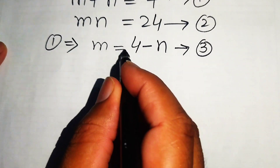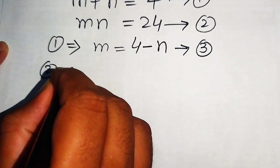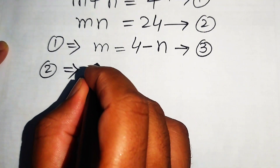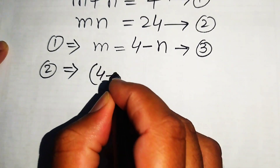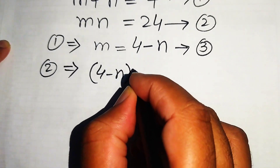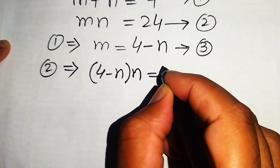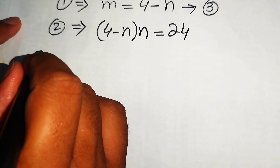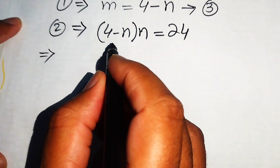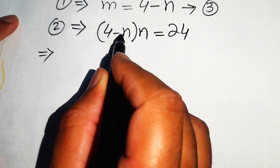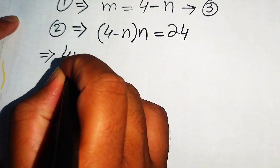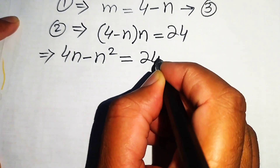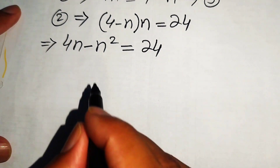We substitute this value of m into equation number two. Equation number two becomes (4 minus n) times n equals 24. Multiplying out, we get 4n minus n squared equals 24.